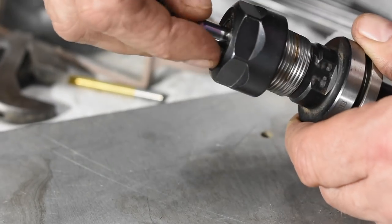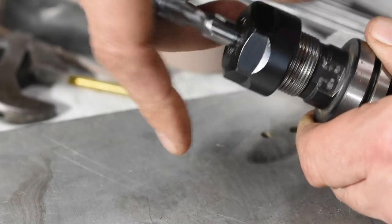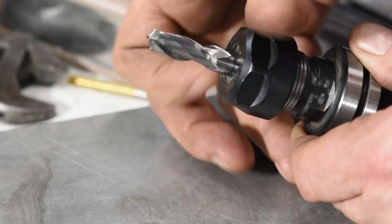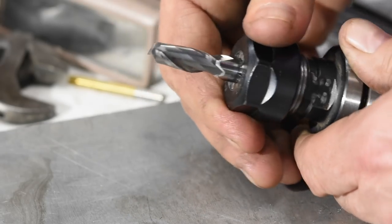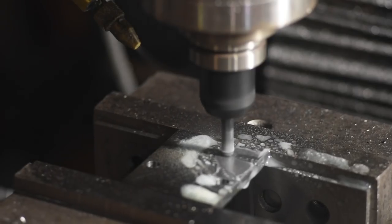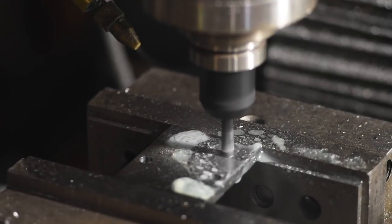Because a collet is sized to a particular diameter of stock, it has much more surface area in contact with the tool than a drill chuck does, resulting in more friction and therefore better clamping pressure. So collets are less susceptible to what's known as pull-out.